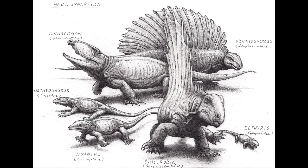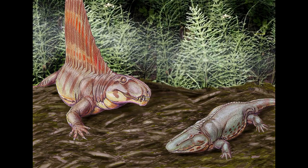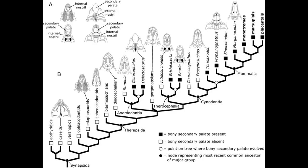Now we've reached the so-called pelicosaurs or basal synapsids, which first appeared in the late Carboniferous. The early Permian and Carboniferous were cooler than the second half of the Permian, and polar ice caps existed. The pelicosaurs dominated the early Permian, radiating into a variety of clades: Eothyrididae, Caseasauridae, Varanopidae, Ophiacodontidae, Edaphosauridae, and Sphenacodontidae.